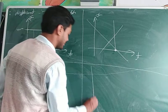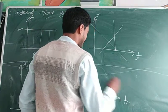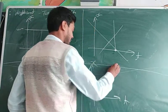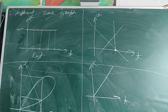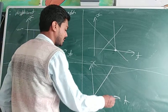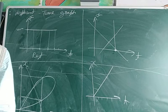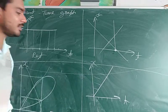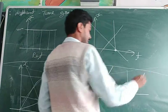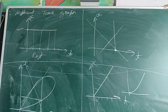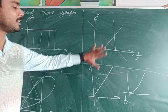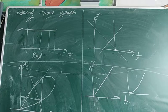Our next graph represents uniform velocity — a body covering equal distance in equal intervals of time, as we studied in Class 9. If the graph is a straight line, it gives uniform velocity. If the graph is curved, it gives non-uniform velocity. By the different shapes of the graph, we can identify the types of motion.